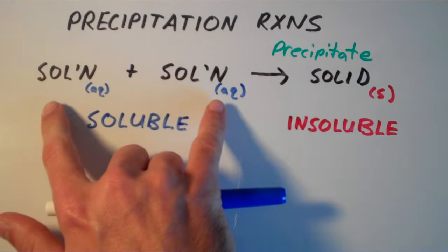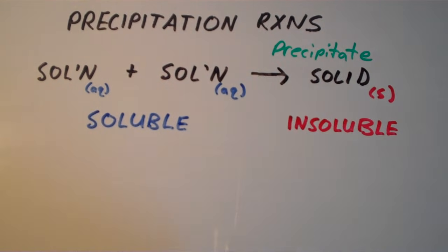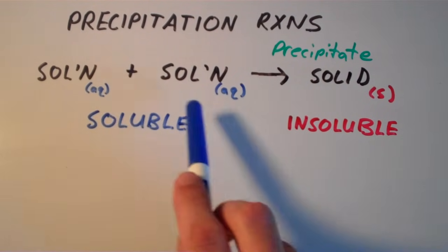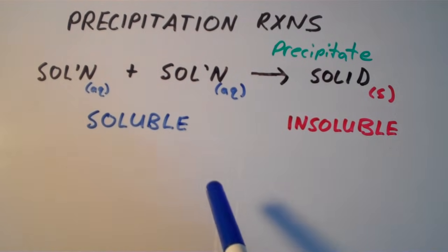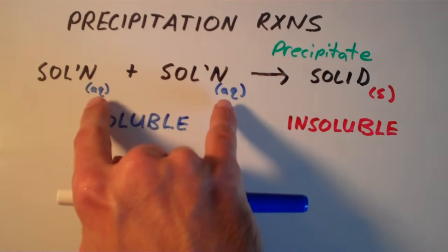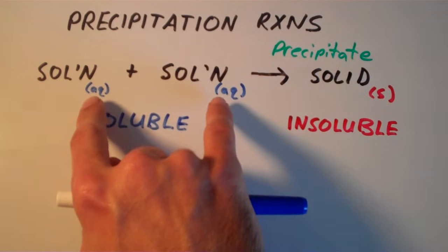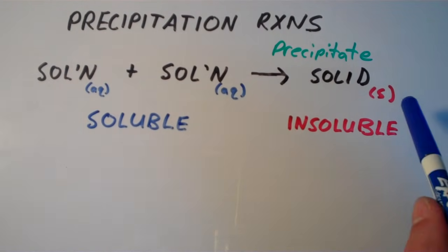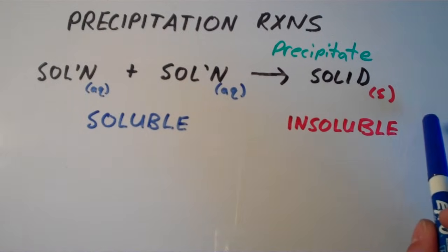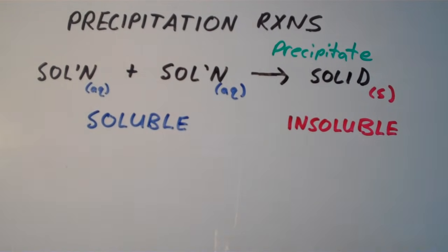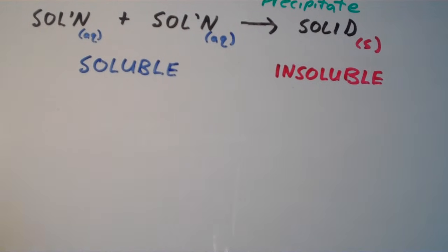The solutions that we start with are always going to be soluble ionic compounds. We express the fact that they are soluble by attaching AQ in parentheses at the end — these state symbols are very important and you can't leave them out. For a soluble ionic compound you use AQ for aqueous. However, if the product of the reaction is an insoluble ionic compound, then you use S in parentheses for solid. Otherwise, if it's soluble, you use AQ just like the reactants.